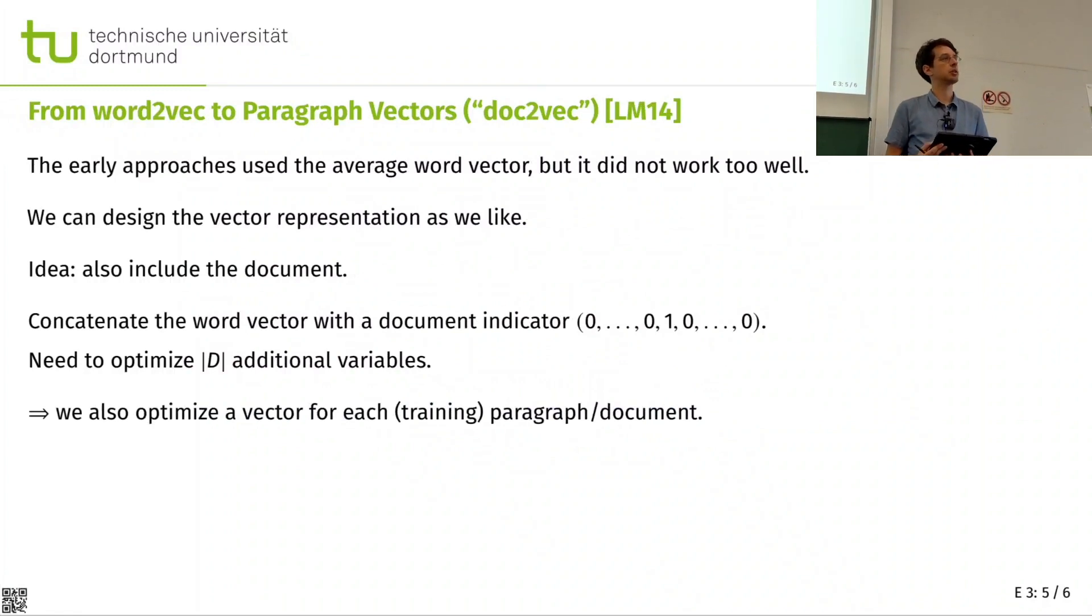But the word level is, let's say, nice for machine translation. But what if you want to find similar documents? Then we don't need vectors on the word level. We need vectors on a paragraph or a document level. And that led to paragraph vectors and a method called doc2vec, document2vector, also by the same author, Mikolov. And it is a very canonical extension of word2vec, except that we also add one-hot encoding of the document, the sentence or the paragraph occurs in.